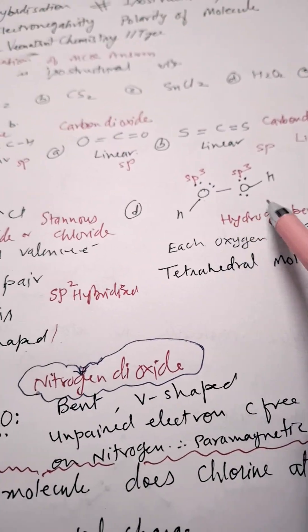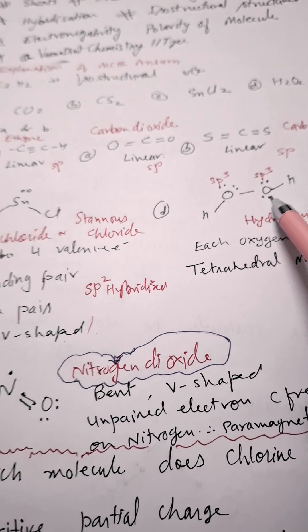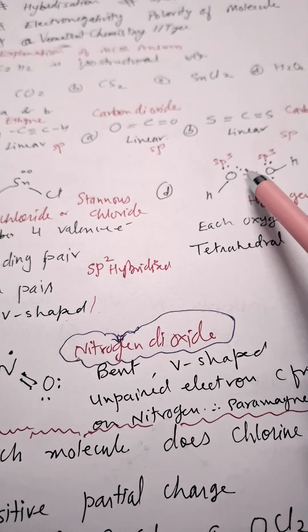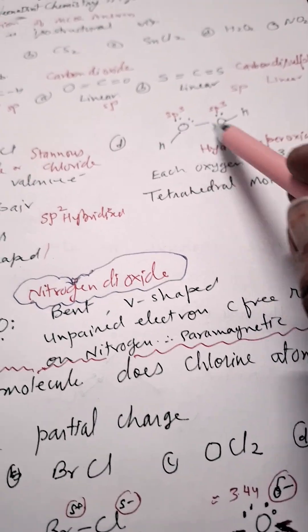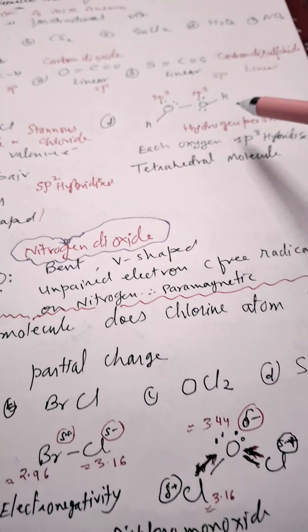This is H2O2, this is hydrogen peroxide. This oxygen as well as this oxygen, each oxygen is having two lone pairs of electrons and two bonding pairs. So that is why it is tetrahedral.